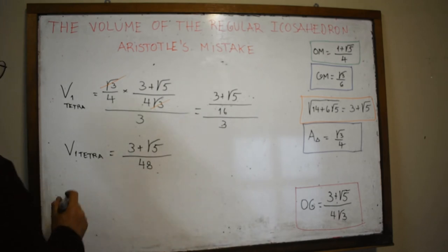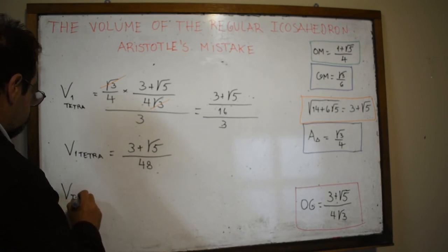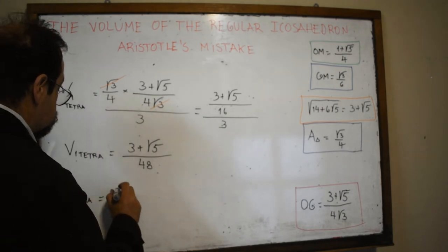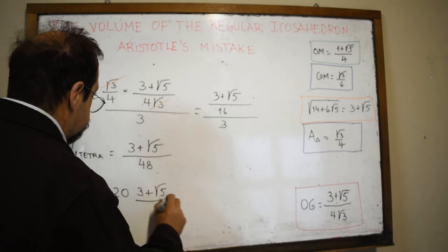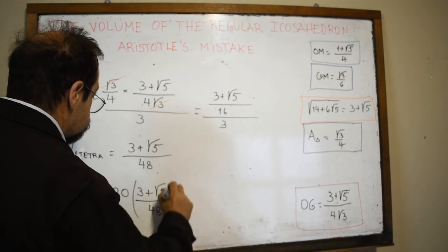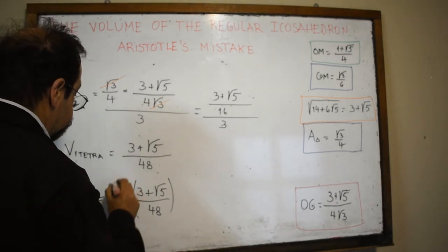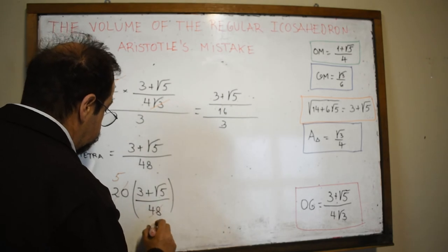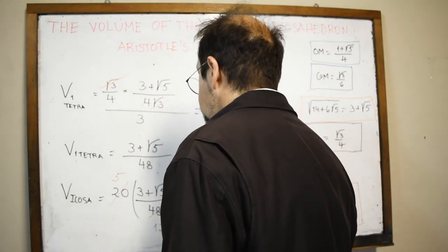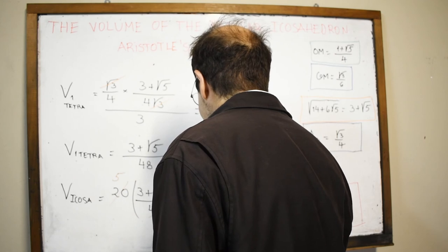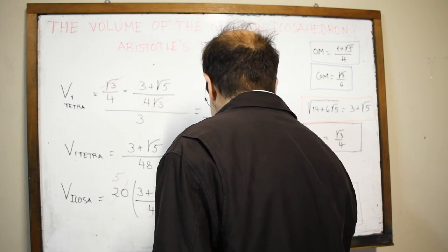The volume of the icosahedron is 20 tetrahedrons. So the volume of the icosahedron is 20 × (3 + √5)/48. Simplifying by 4 gives (5(3 + √5))/12, and applying the distributive property: (15 + 5√5) / 12.